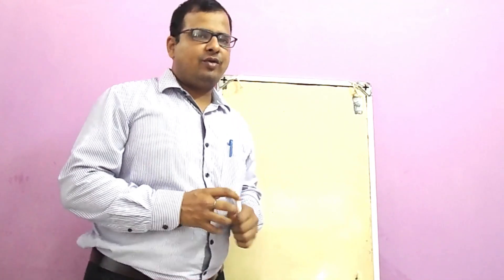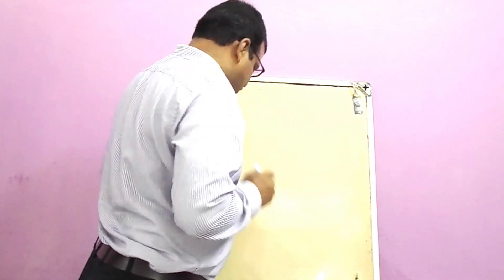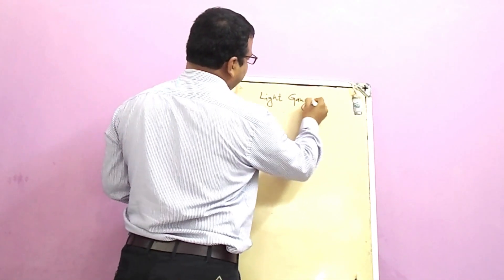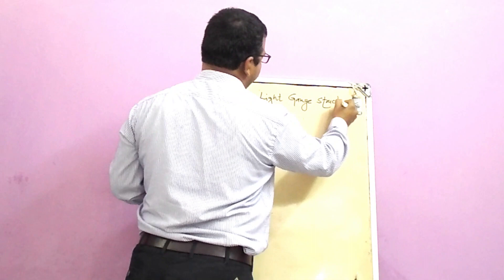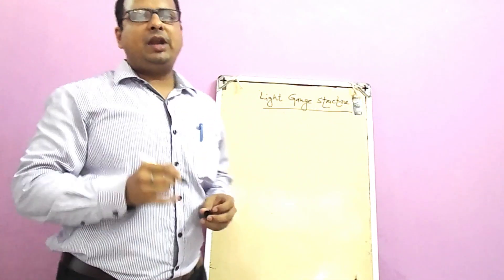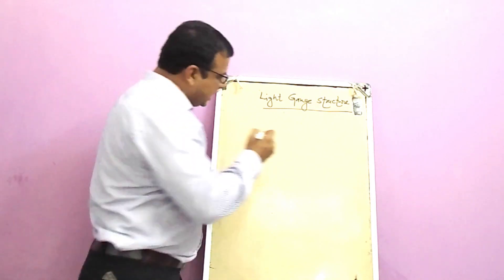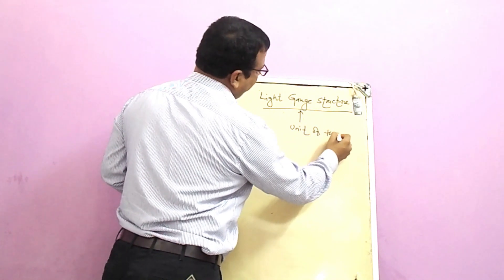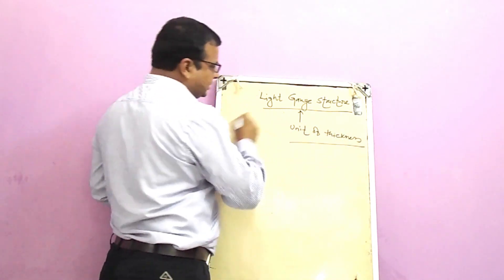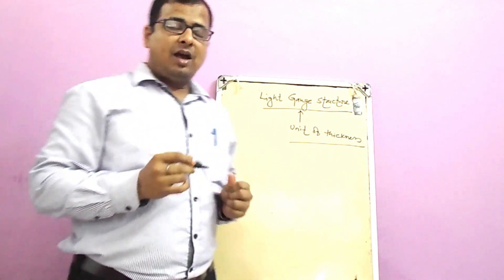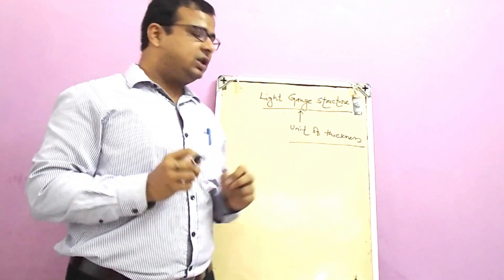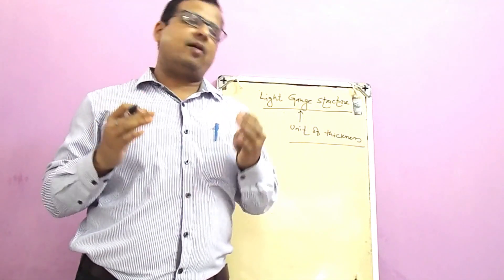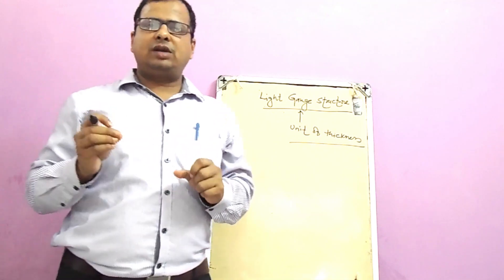Today we will discuss light gauge structures. The word 'gauge' is a unit of thickness. The term 'light' in light gauge means we are using sections which have less thickness so that we can achieve our structural goal.